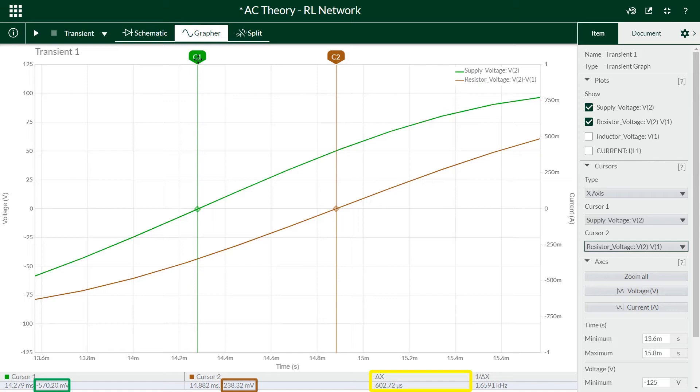The default setting on Multisim can be improved though, so that there is more data points on the graph so we can more accurately find when the voltages cross the X axis, and this will give us a more accurate time difference between them to find a better phase difference overall.